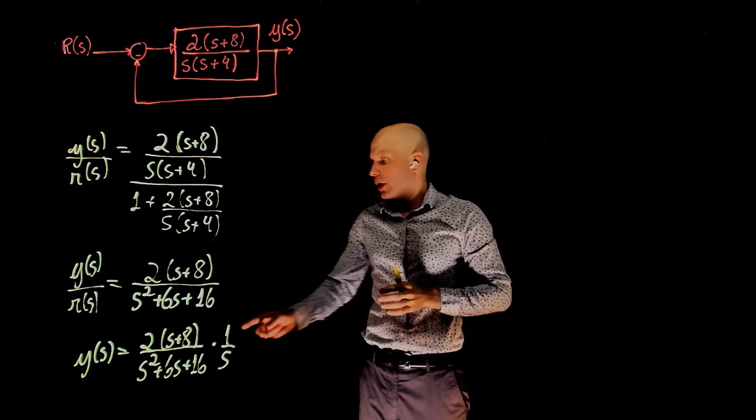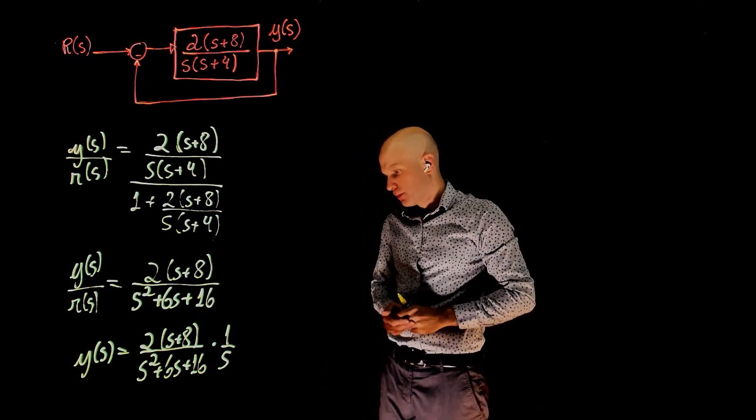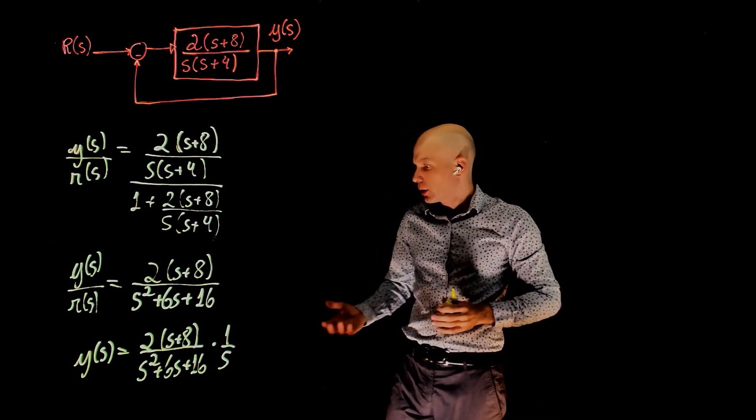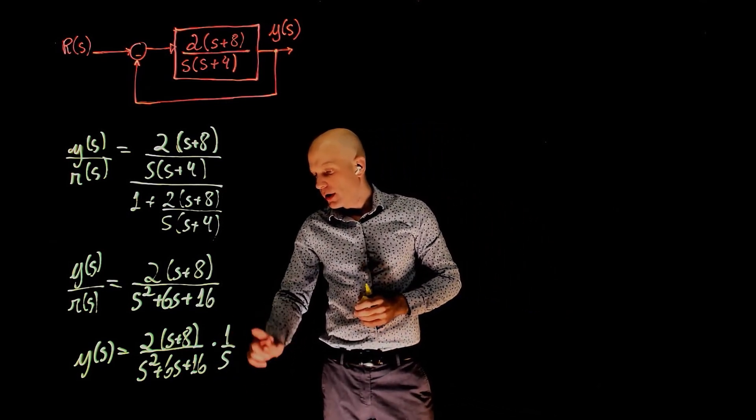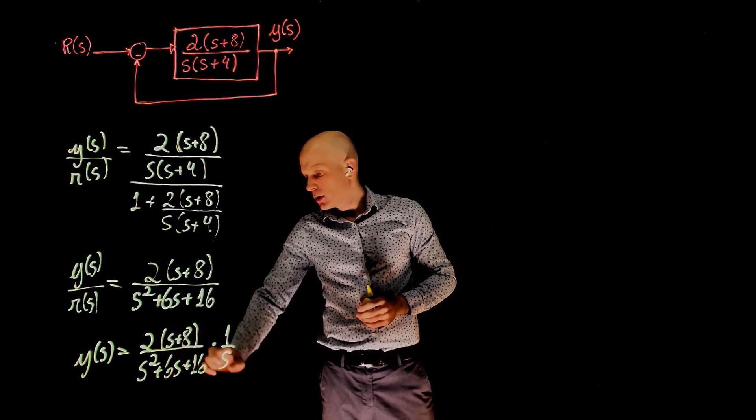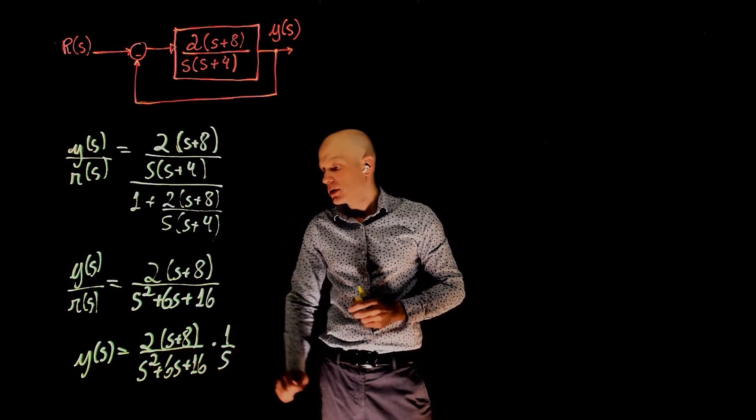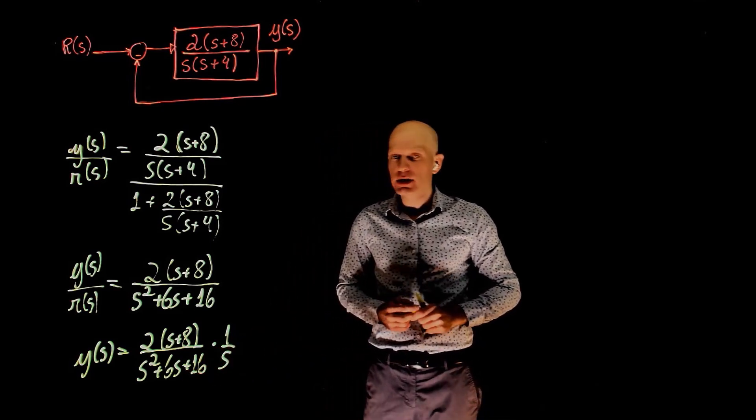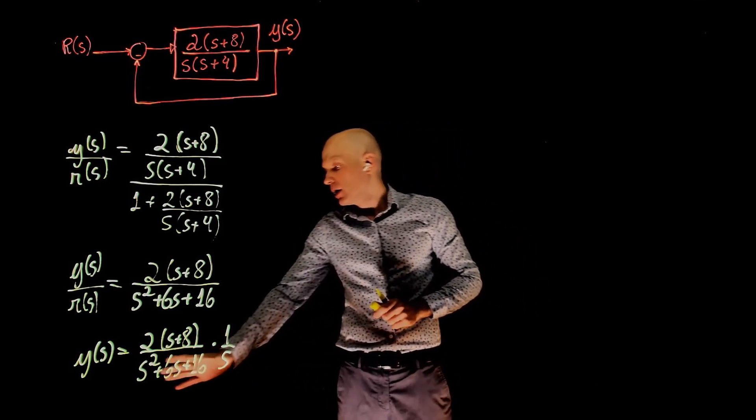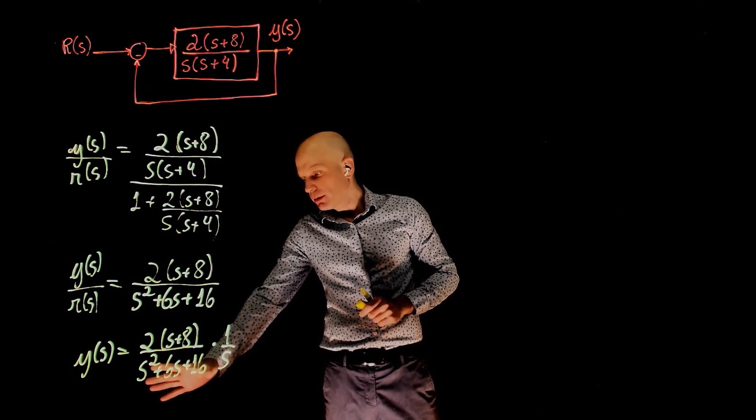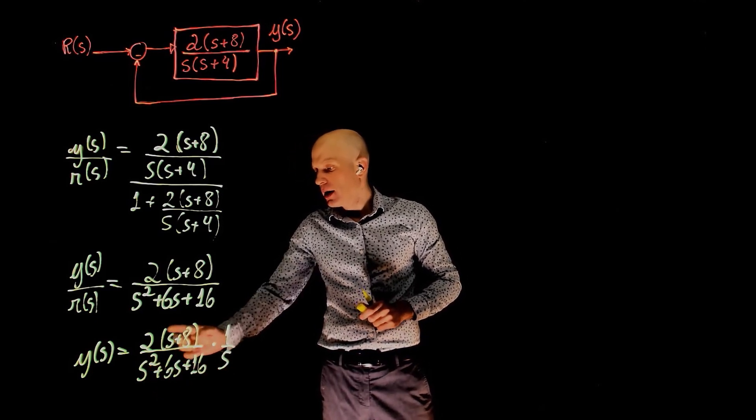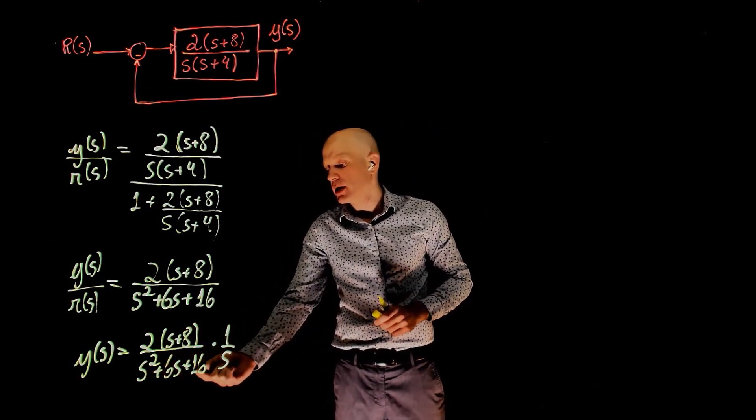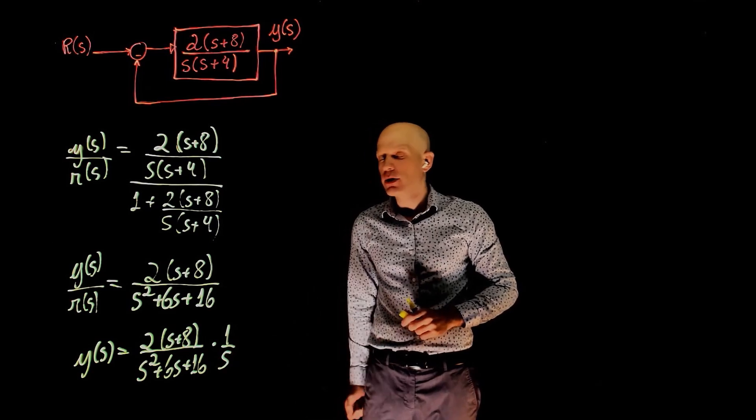This analysis will require this expression to be written in partial fractions. We know how to do partial fractions now, so I'm going to skip that. Just to recall, we can have a over s plus something over s squared plus 6s plus 16. If you look at the damping ratio here, the damping ratio will be less than 1, which means that we cannot simplify this expression. So we need on top here, bs plus c, so we have bs plus c over s squared plus 6s plus 16, plus a over s.